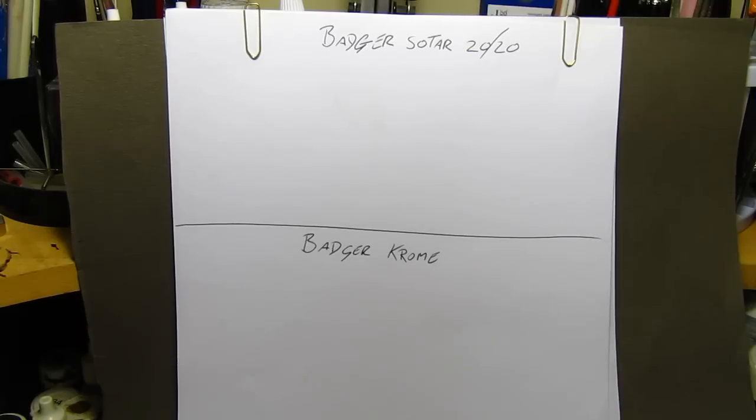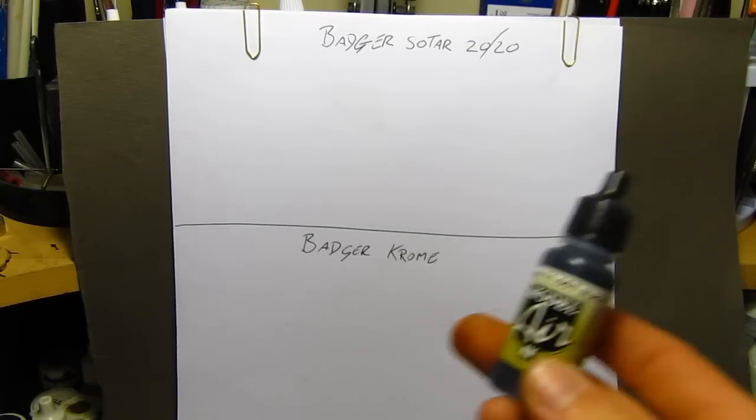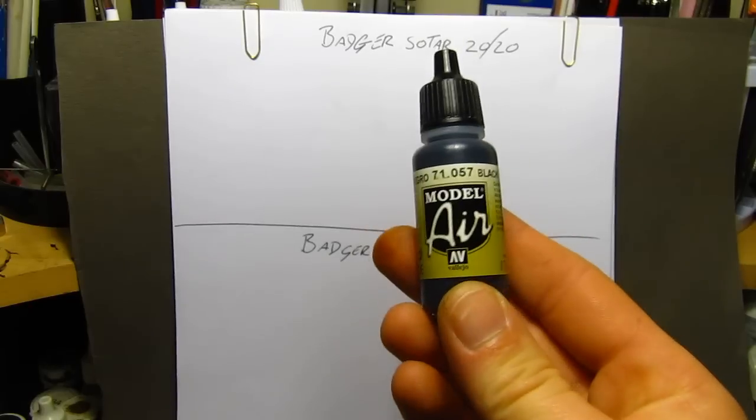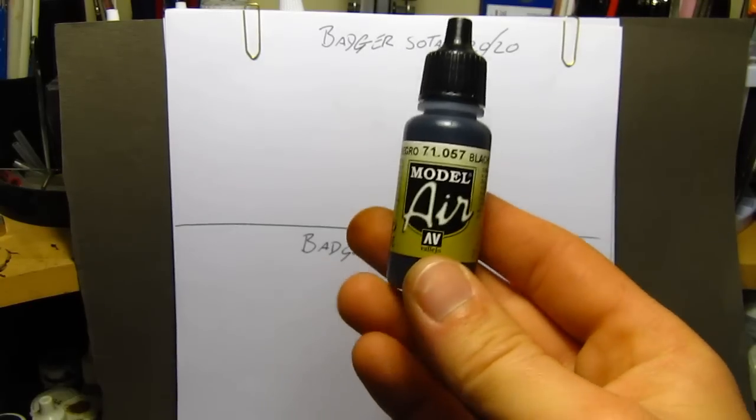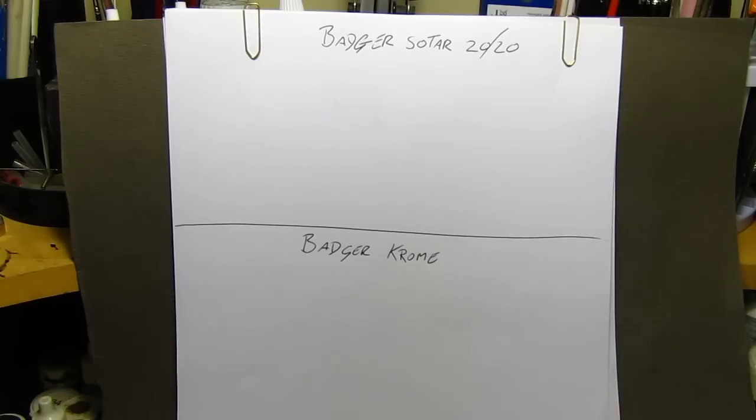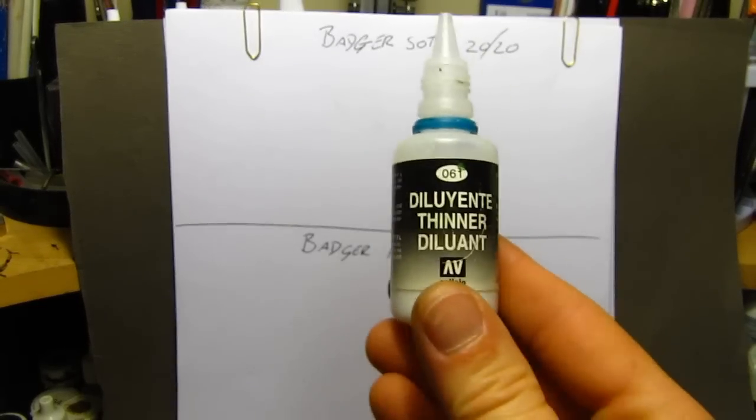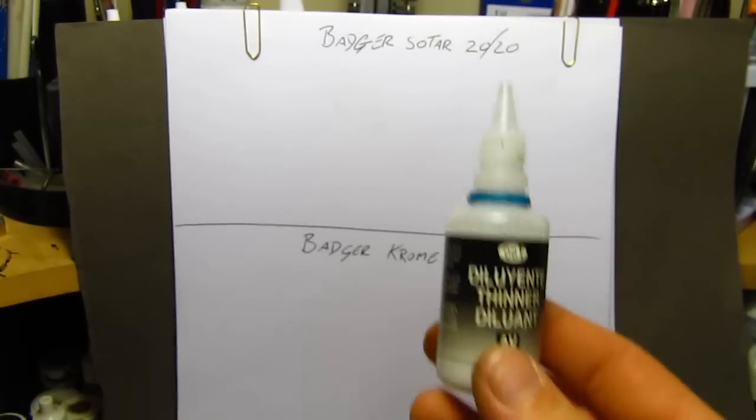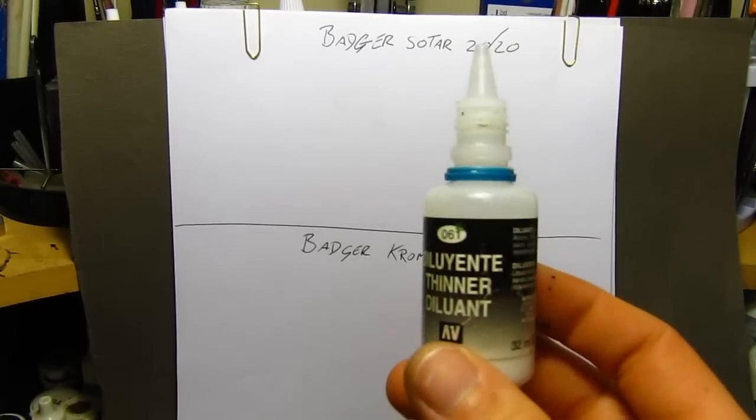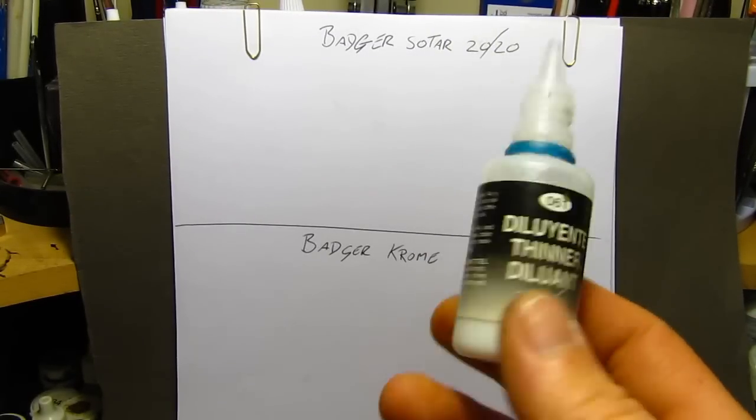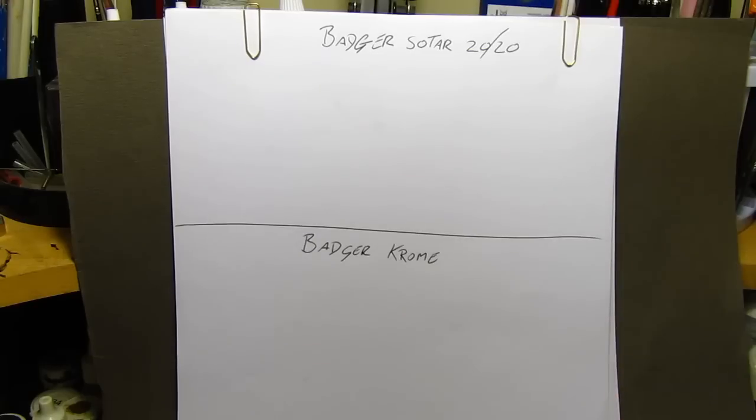So guys, here we go. First of all, I'm using for this test the Leo Model A Black and I've reduced it down by 150% with their recommended thinner. So I'm not using any Windex or Windolene, I'm using their recommended thinner.